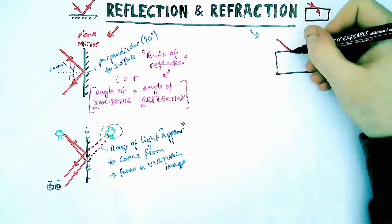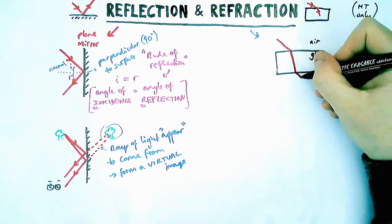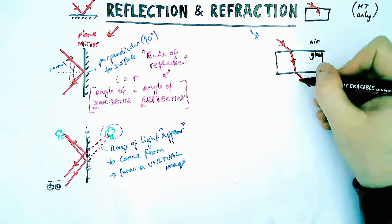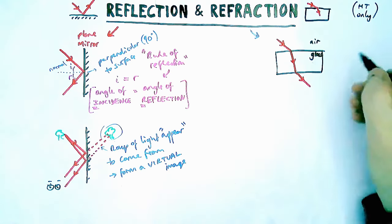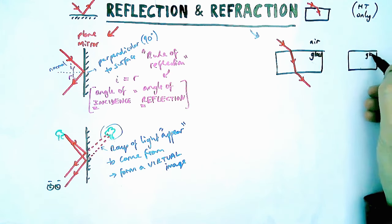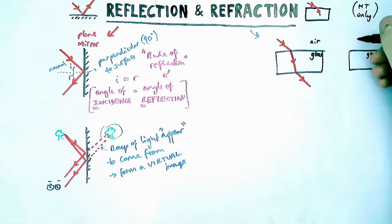So when light hits glass it bends if it hits it at an angle, and then when it leaves the glass it also bends back to the same angle it was before. If it doesn't hit at an angle it just goes straight through like normal.